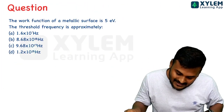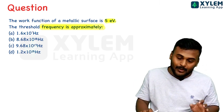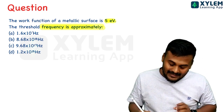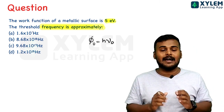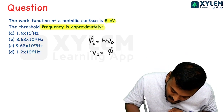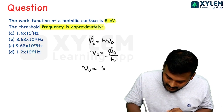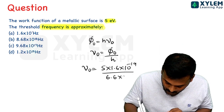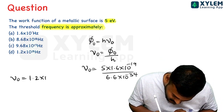The work function of a metallic surface is 5 electron volts. The threshold frequency is approximately what? The threshold frequency relates to work function by: phi-nought equals h times nu-nought. So nu-nought equals phi-nought divided by h, which equals 5 into 1.6 into 10 raise to minus 19 divided by 6.6 into 10 raise to minus 34. The threshold frequency equals 1.2 into 10 raise to 15 hertz.